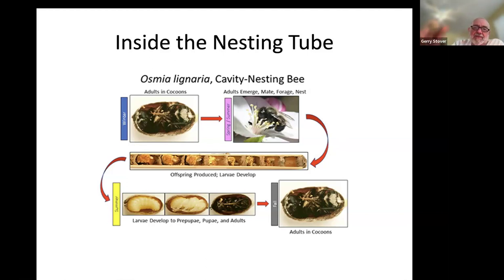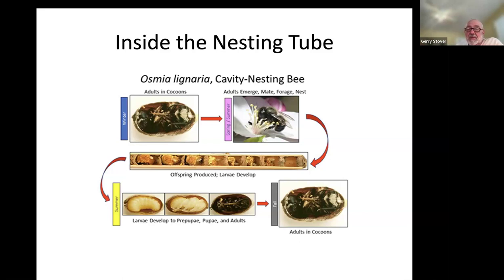I bought these cocoons from Crown Bee — 40 bees total, 20 in this container and 20 in another, for $14.95. My entomologist mentor shakes his head when I bring in insects from other places unless he's confident in the seller's quality assurance. These solitary bee sellers are usually in Utah, and many source their bees from Canada. Crown Bee does have a buyback program for the cocoons.